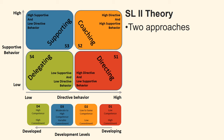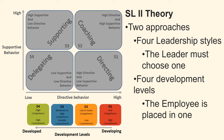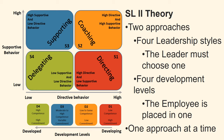SL2 theory consists of two approaches. In the upper part of the model, there is a matrix with four leadership styles. According to the theory, the leader must choose one of these four styles. In the bottom of the model, there are four development levels. According to the model, the employee is placed in one of those levels. We will review one approach at a time.